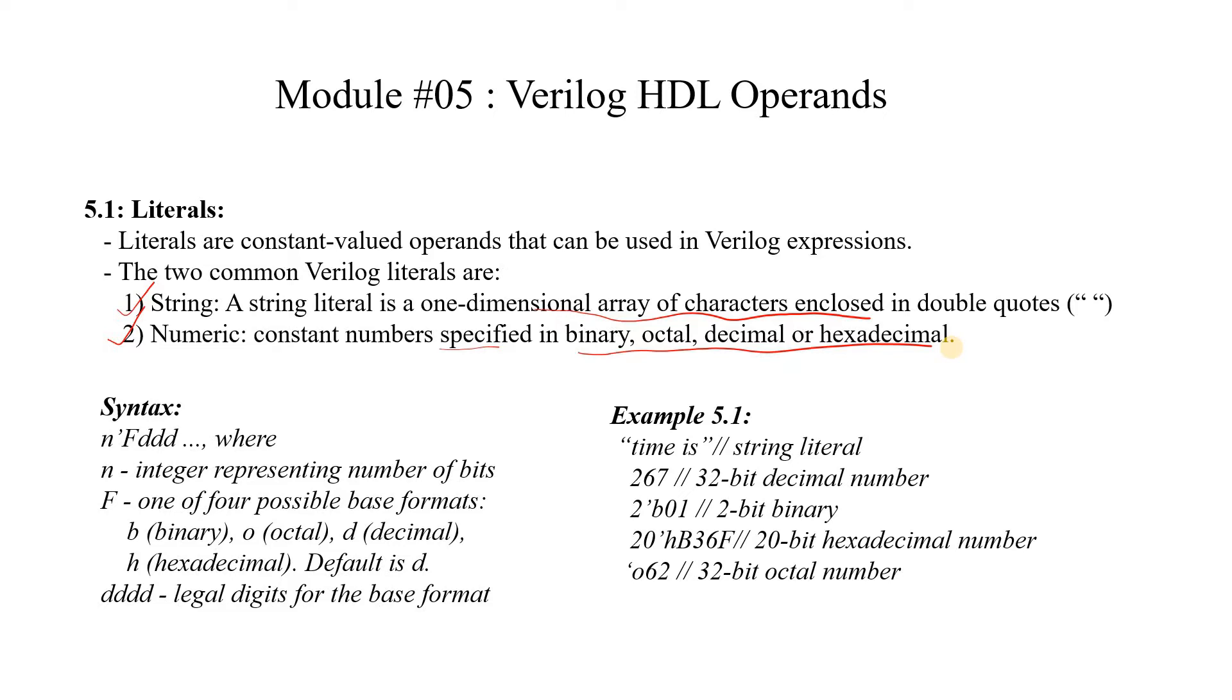We can have a number literal defined like n'f DDD where n is an integer representing number of bits. If it is 5, that means this constant number is a 5 bit value. The F defines one of four possible base formats: binary, octal, decimal or hexadecimal. Default if nothing is defined is decimal. DDDD are legal digits for the base format.